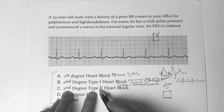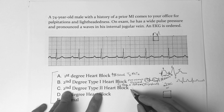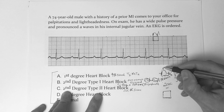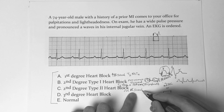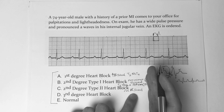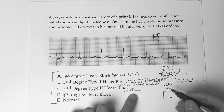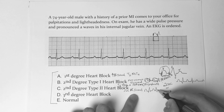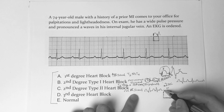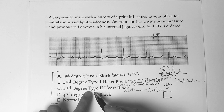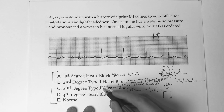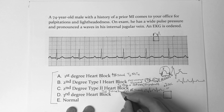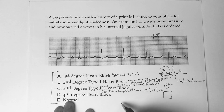In a second-degree Mobitz type 2, you have a normal PR interval — one big box or less, 0.2 seconds or less. But eventually you can have a dropped beat. So it's normal PR with all of a sudden a dropped beat. That's second-degree Mobitz type 2. Since there's a dropped beat, the treatment is going to be internal pacing.